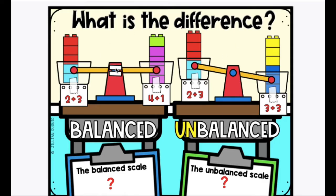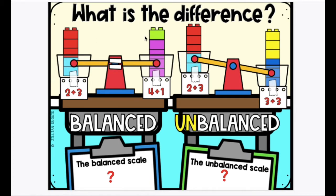First, let's look at these balancing scales. What is the difference? We have 2 plus 3 and 4 plus 1. What do you notice? This scale is balanced. How do you know? One thing you could say is the balanced scale has the same number of cubes.